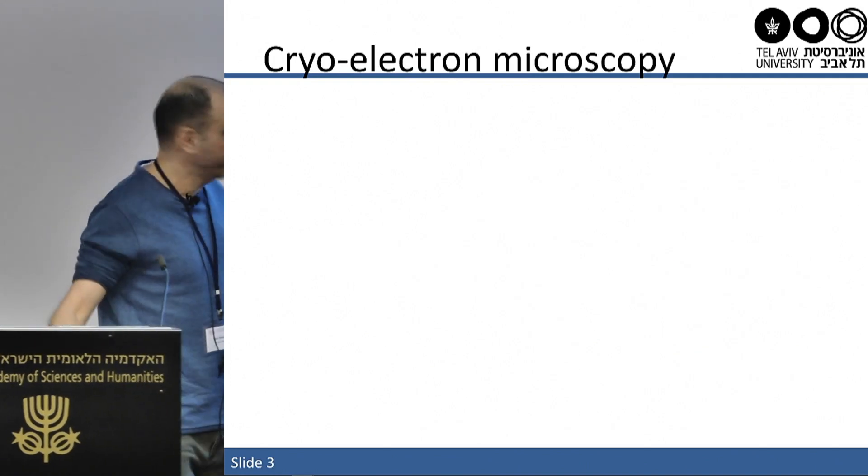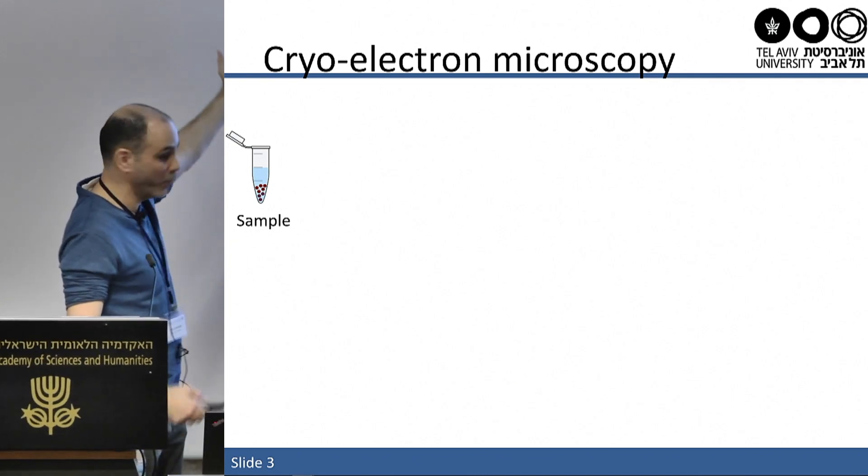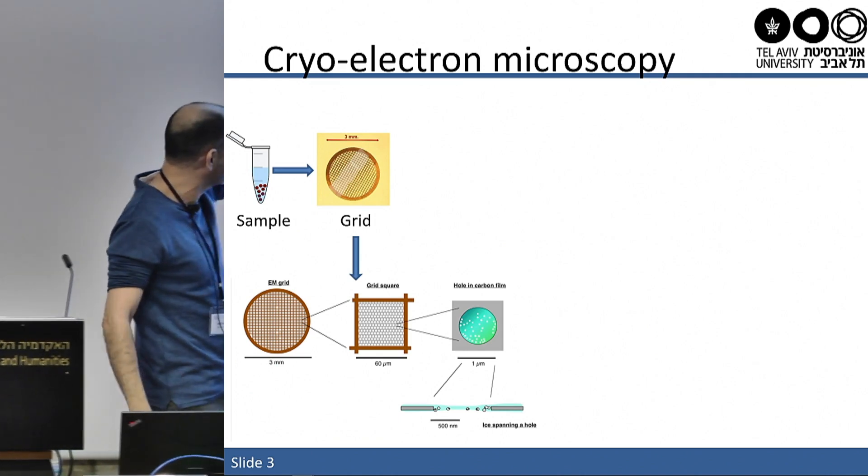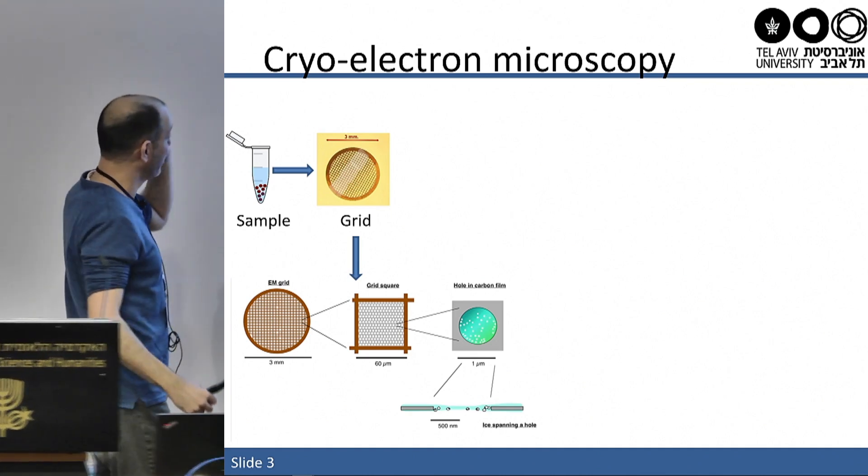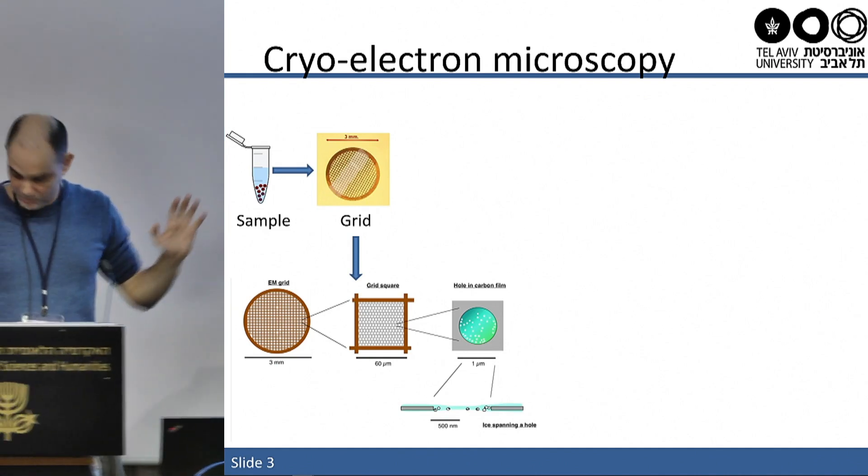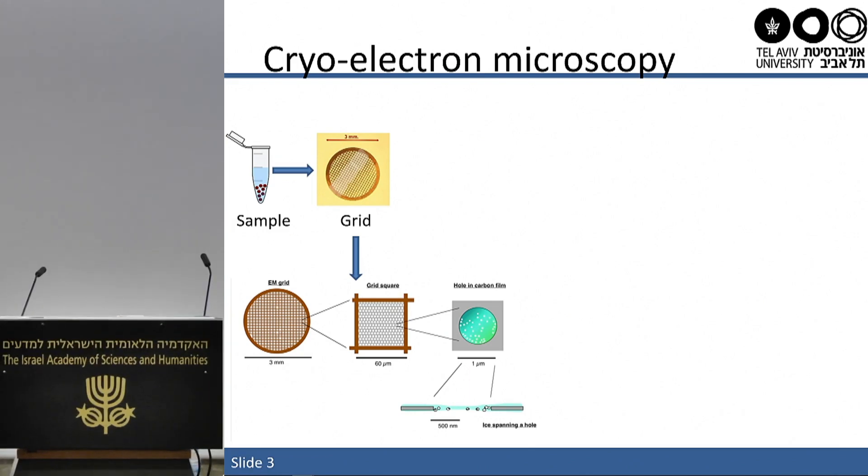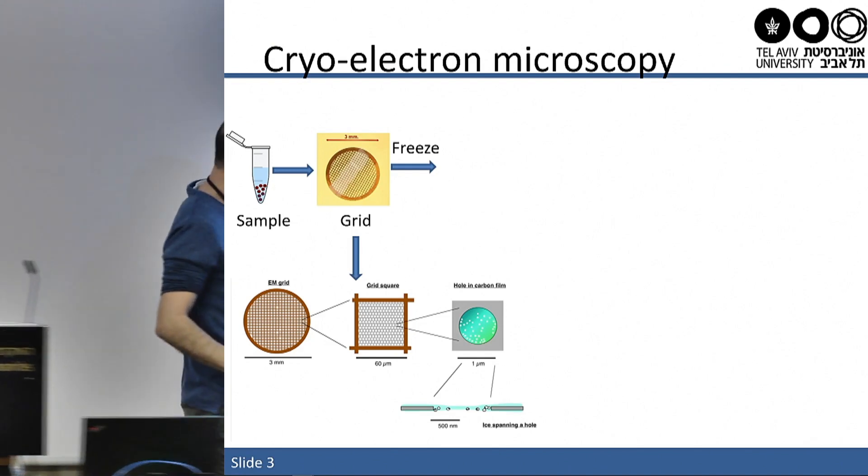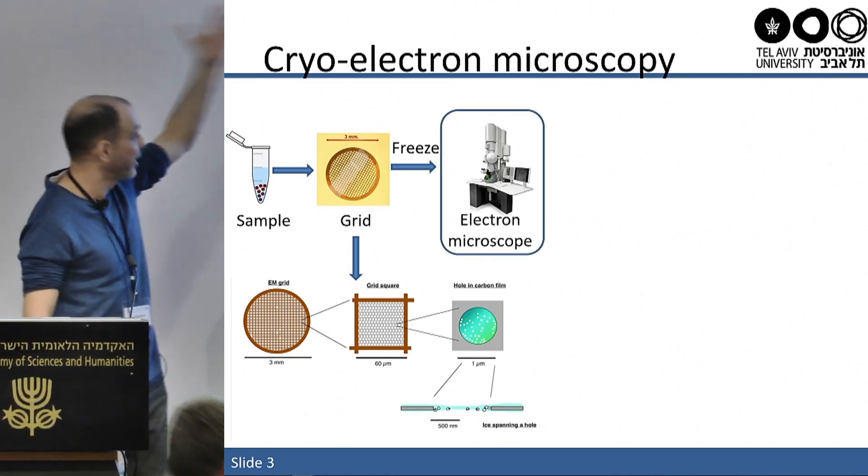Let me give you a quick overview of this method. You want to resolve some structure, you take many copies of your molecule, you put them in water, and then you pour them on this grid. The grid is made of white cells where each cell has a net, usually carbon filled with holes, and when we pour the water, we get a thin layer of water where the molecules are free to move. And then we take this grid and we plunge it, we freeze it very rapidly, and we get an ice layer that freezes all molecules in place.